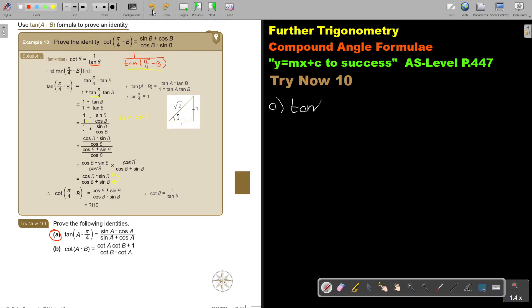So let's start. Tan of a minus π over 4 is equal to sin a minus cos a over sin a plus cos a. Now I'm going to start with the left-hand side. So I'm starting, and I'll first write it again. So it's tan a minus π over 4.